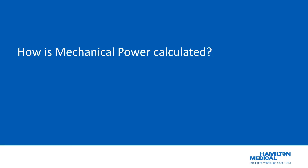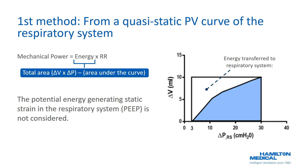The authors describe three methods for calculating mechanical power. The first involves analysis of a quasi-static PV curve of the respiratory system. From this low-flow PV curve, the total area of the PV rectangle is calculated, then the blue area below the PV curve is subtracted, leaving the white area which corresponds to the energy transferred to the respiratory system. This value multiplied by respiratory rate gives the mechanical power. However, using this method, the potential energy generating static strain — and therefore PEEP — is not included in the calculation.